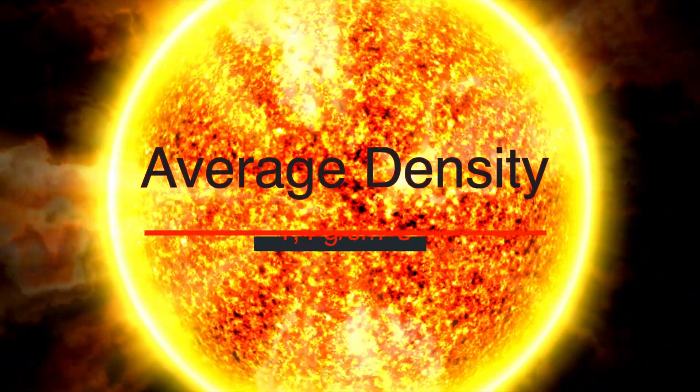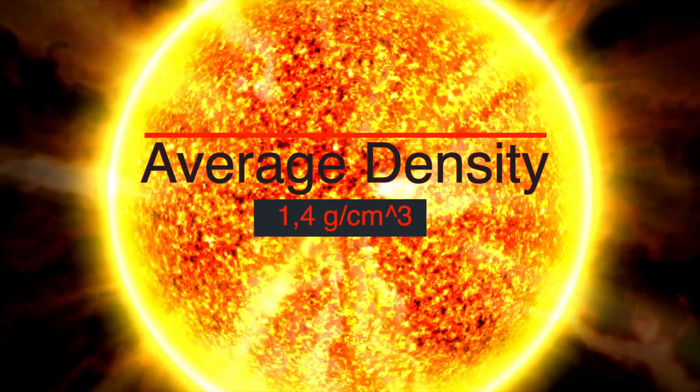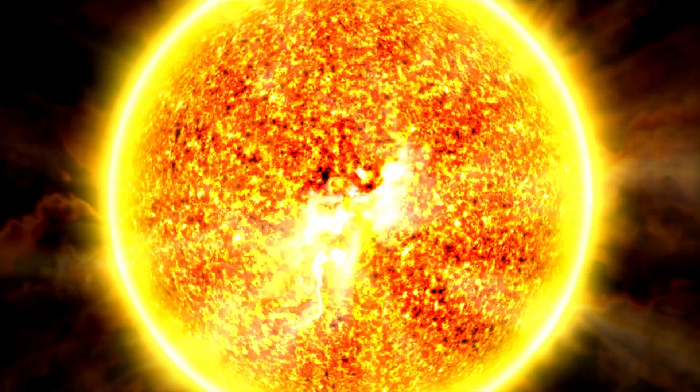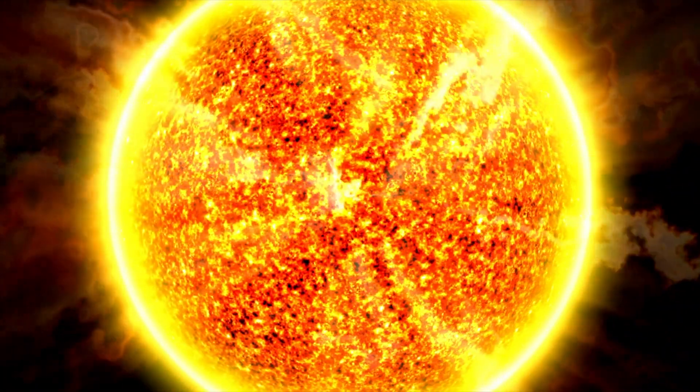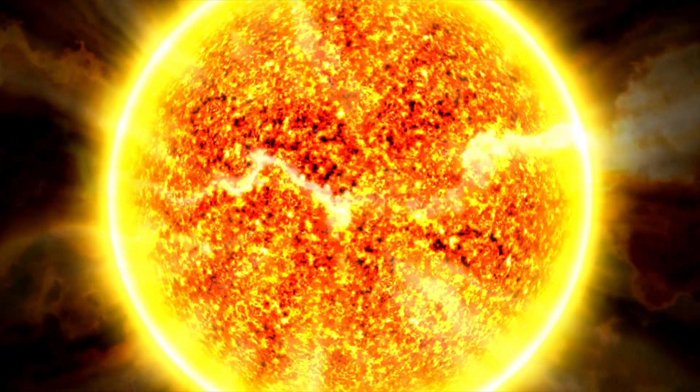The average density of the Sun is about 1.4 grams per cubic centimeter. This is a very low density compared to Earth, as the Sun consists mostly of gases.